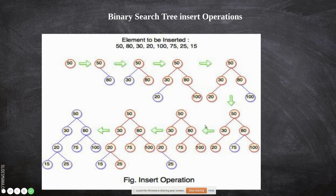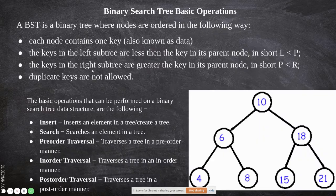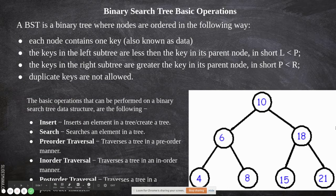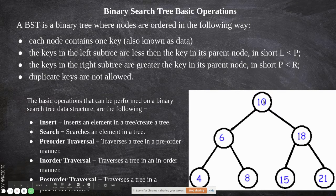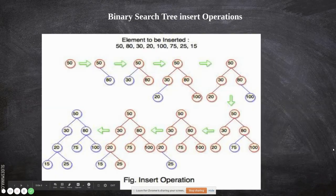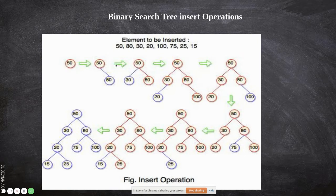Let us take an insertion example to be clear. The order of elements to insert is given. Whichever element is inserted first becomes the root node. The root is at the top; below it are children, then grandchildren, and so on. These connections are edges and the data points are nodes. So the first element is 50 — we make that the root node.